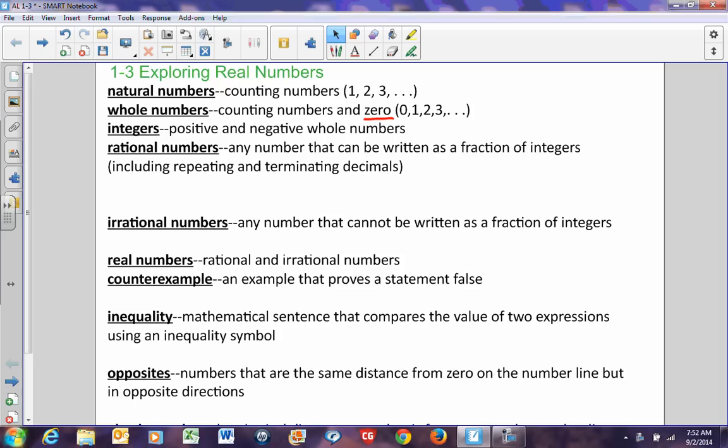Rational numbers are any number that can be written as a fraction of integers, including repeating and terminating decimals. The fraction of integers thing is a little confusing for people. All that means is it has to be written as a fraction of a whole number over another whole number. For example, 2/3 can be written as a decimal, 0.6 repeating, which is why repeating decimals also can be rational numbers because 0.6 repeating can be translated back to 2/3.